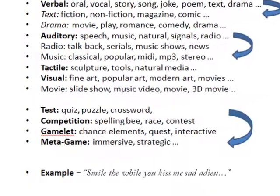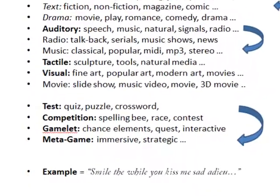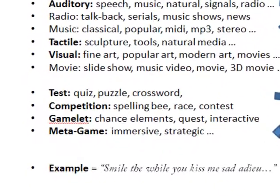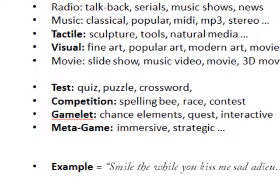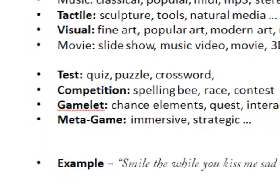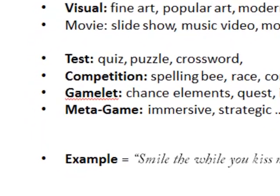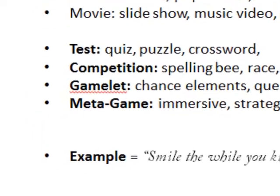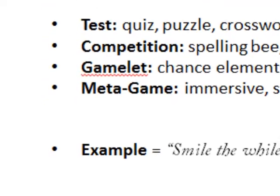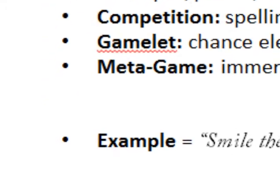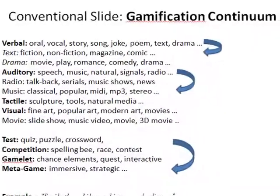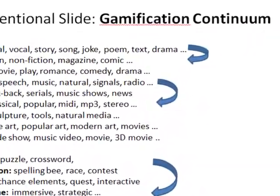To get to the bottom of this list, an immersive strategic metagame would imply that you used many of the skills above in the hierarchy. You'd have to know how to read and write, maybe sing and make movies, design learning sequences, and so on. Let's do a quick example from the top of the list.